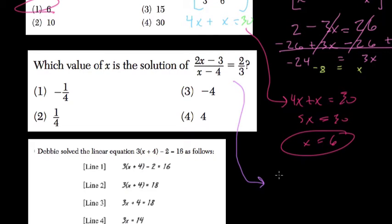But what's really nice about this one is that you can actually cross-multiply: x minus 4 times 2 and 3 times 2x minus 3. So 2x minus 3 times 3 equals 2 times x minus 4.